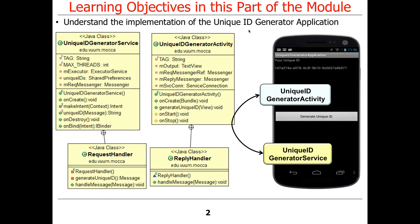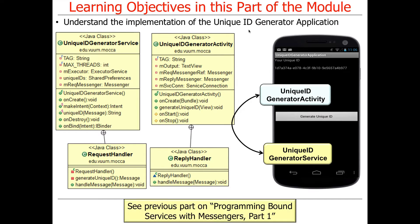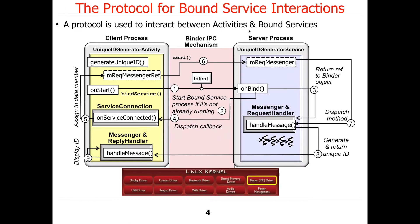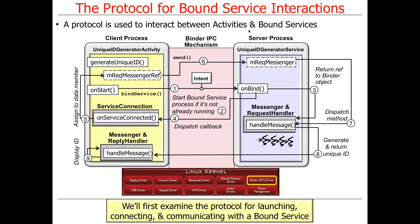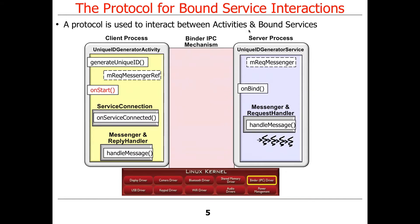Now we're going to dive into the source code. Just a quick recap at a high level so you remember the different steps. This is the protocol for launching, connecting, and communicating with a bound service. Despite the fact that this is the unique ID generator service, the same basic steps apply for almost every bound service — the download service we do is almost identical.